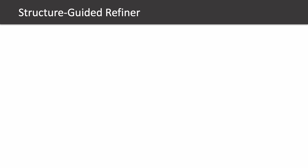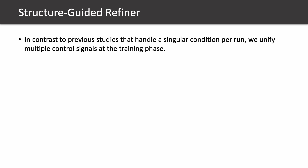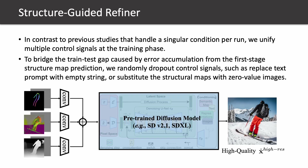In the second stage, the structural guided refiner aims to enhance visual quality by generating more detailed results at higher resolution. In contrast to previous studies that handle a singular condition per round, we unify multiple control signals at the training phase. To bridge the train-test gap caused by error accumulation from the first stage structural map prediction, we randomly drop out control signals, such as replacing the text prompt with an empty string or substituting structural maps with zero-value images.